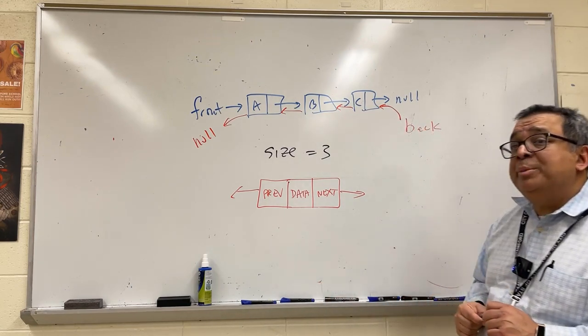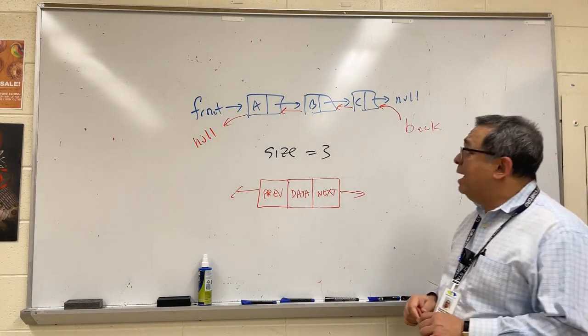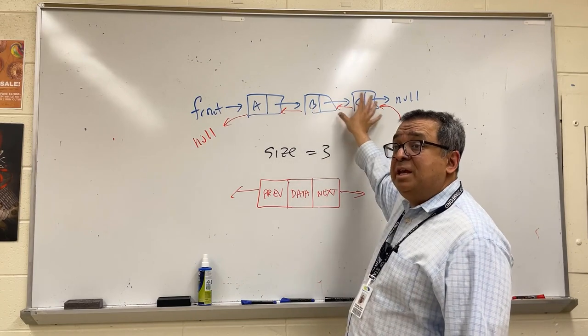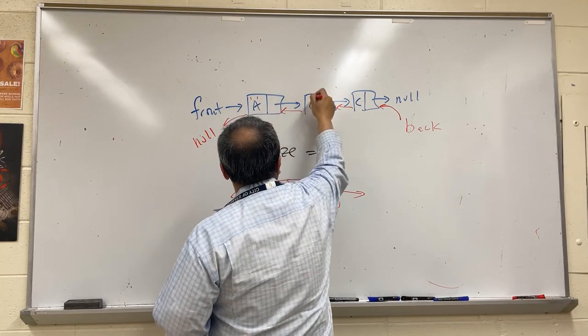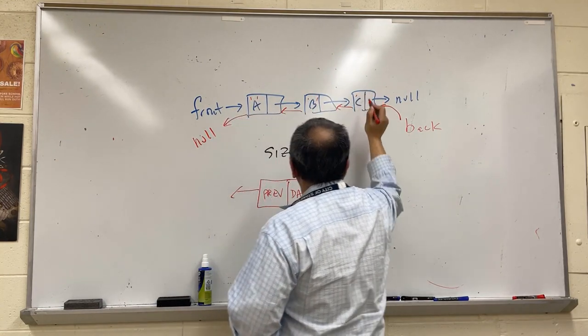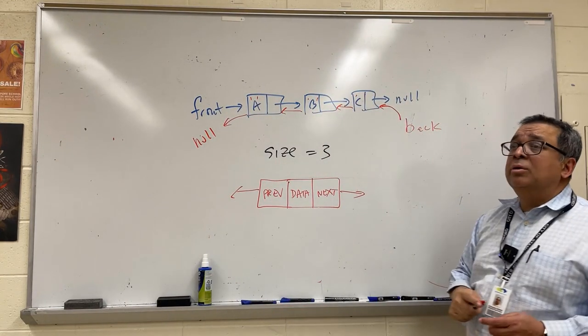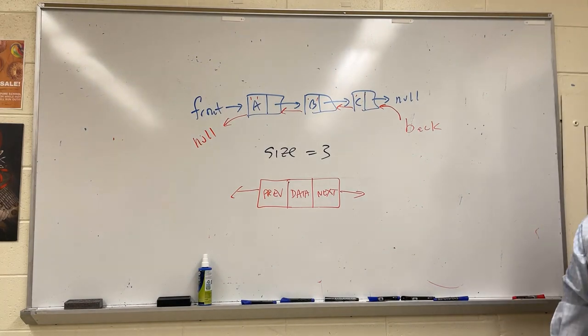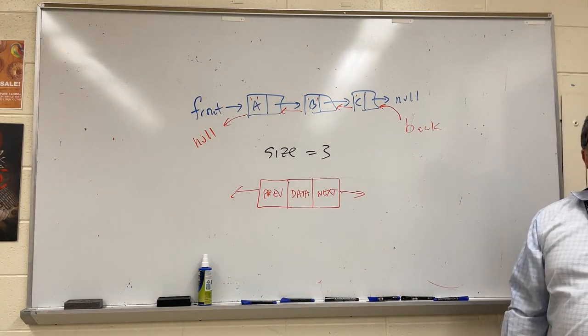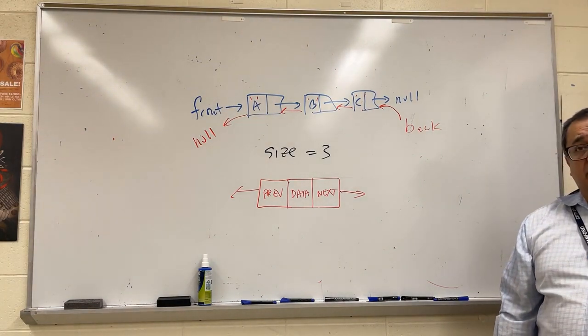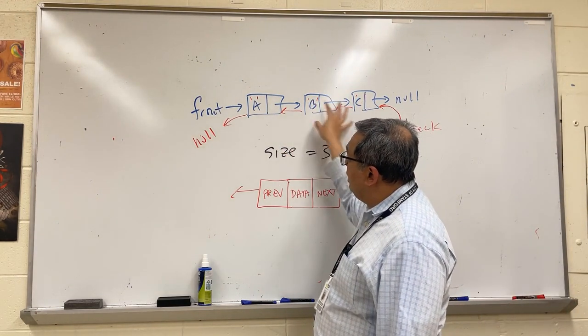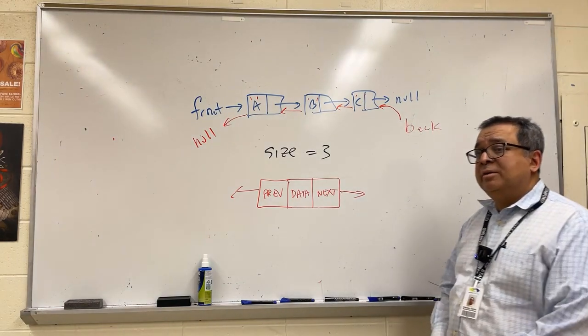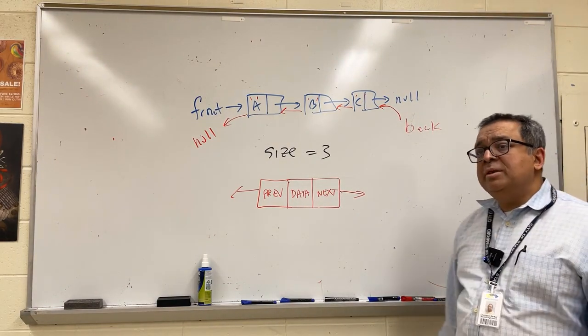So with that idea in mind, what I'd like you to do now is take out a piece of paper and pretend that this list already exists right here like this. We'll say it's a linked list of characters, so we'll say that this contains A and B and C like that. It's all been built for you, and I would like you to write the code to remove the letter B. So we're going to remove this and we're going to put the rest of the list back together. Please do that now.